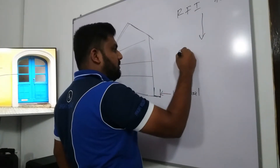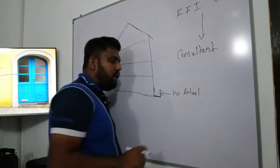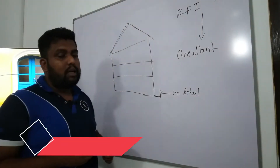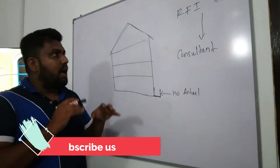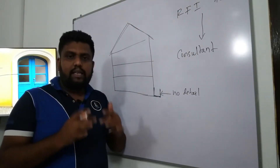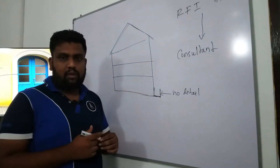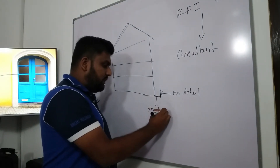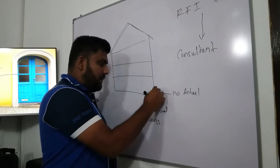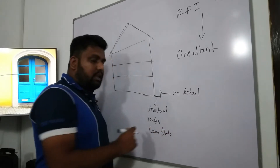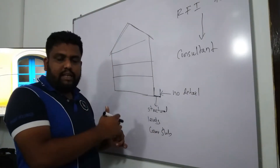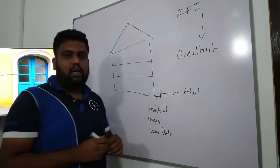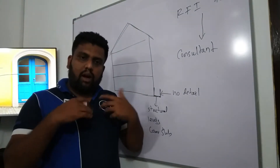What you can do is raise an RFI form to your consultant. If there are no details available, you can request the detail through the RFI form. The special thing is you must mention what details you want — for example, the structural detail, levels, cover slab, and every single detail you need.